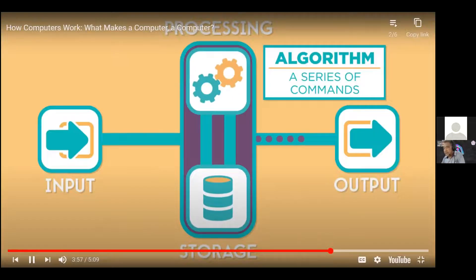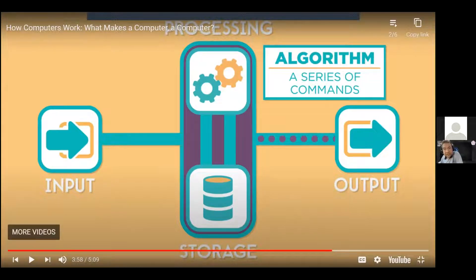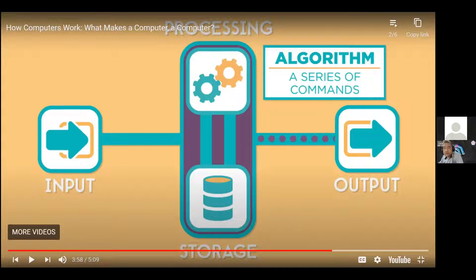Okay, here are the highlights for the second video in the series: how the computer works, and what makes a computer a computer. Digital computers work in four different parts. The input parts — which we know as the user interface — include keyboards, mouse, audio, video, and as we now call IoT (Internet of Things), the computer can receive input from many sensors.